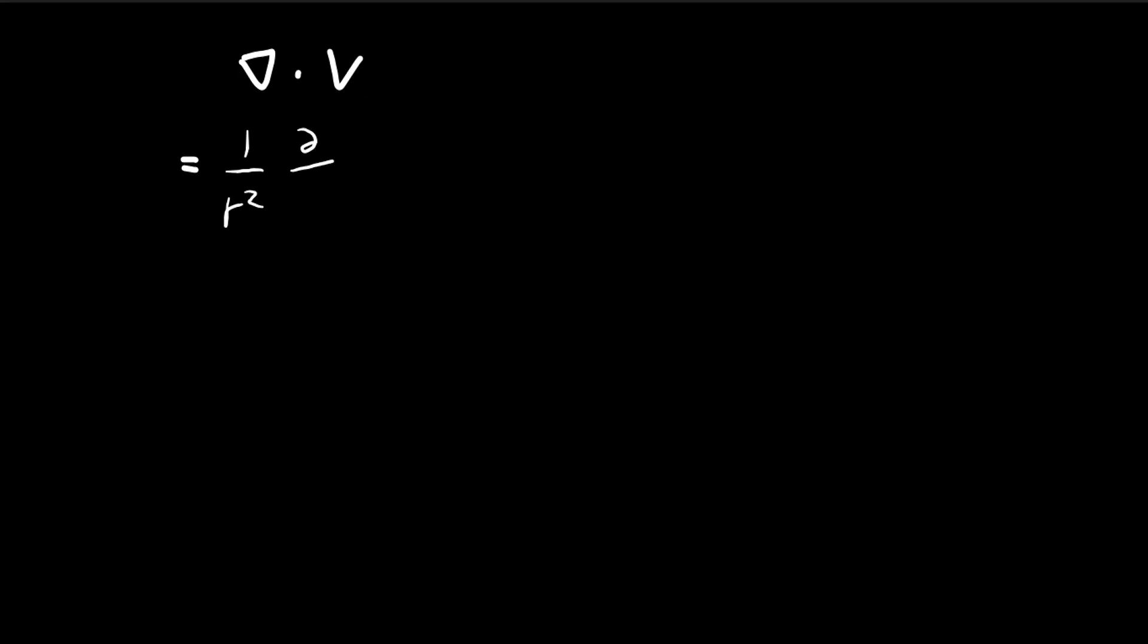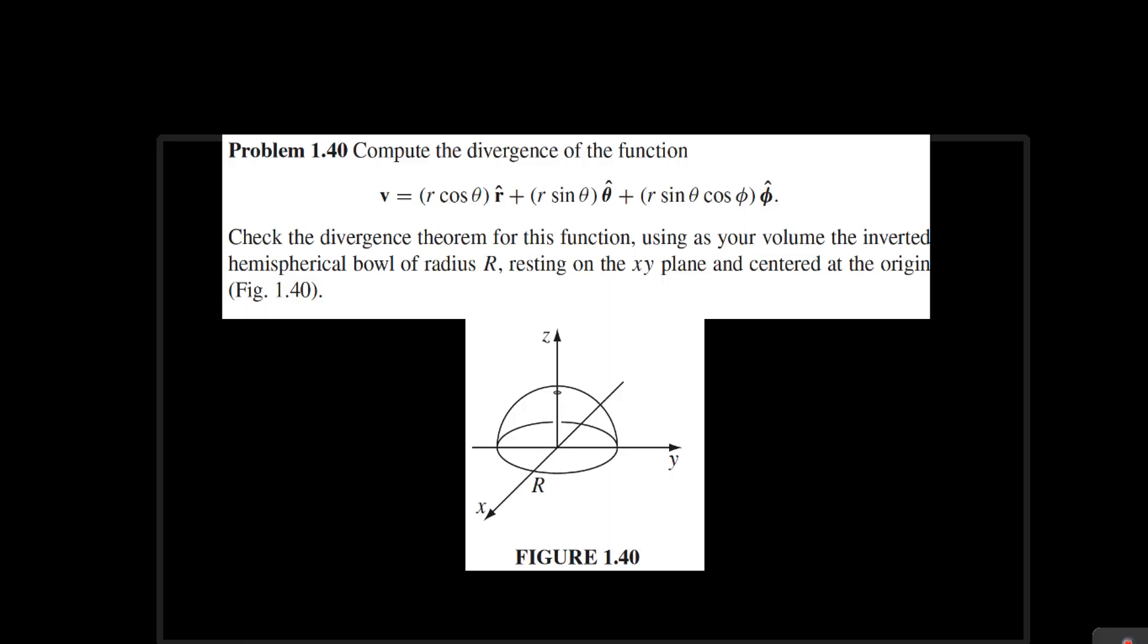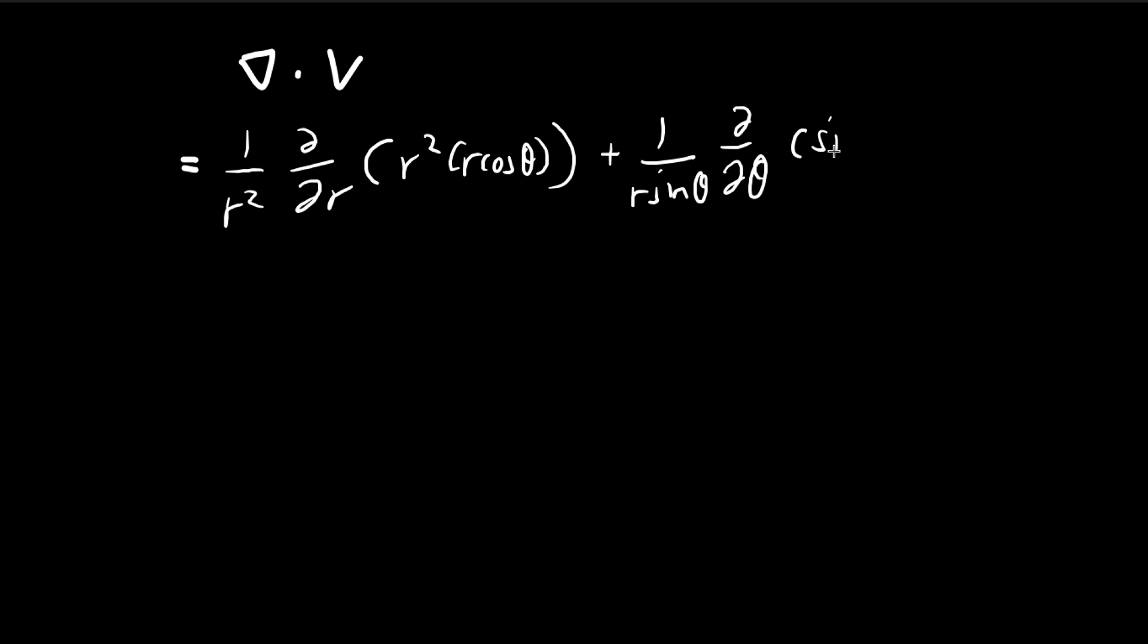So in spherical coordinates the divergence is calculated by taking this expression and then multiplying it by the r component, so r cosine theta. And then plus 1 over r sine theta, the partial derivative with respect to theta, and the sine theta times the theta component. So sine theta times r sine theta.